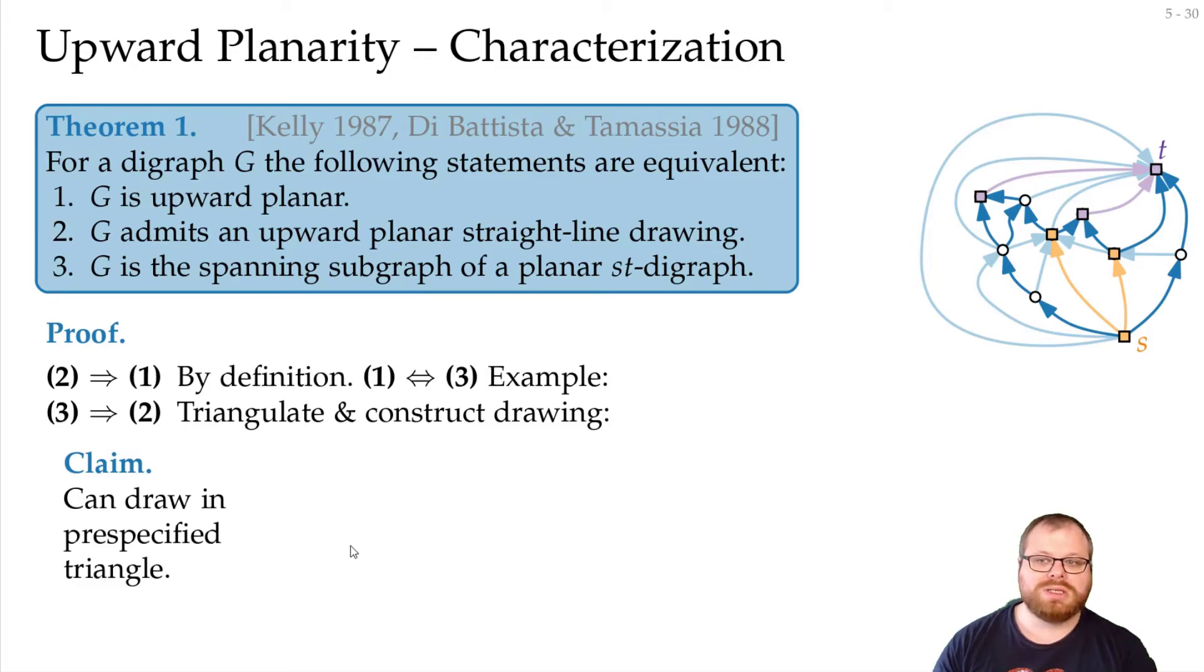And we want to prove that each of these graphs we can draw in a pre-specified triangle. For the induction, the base case is that we have just our vertex S, the vertex T, and some vertex in between. And however the triangle looks like, we can easily just map these three vertices to the corners of the triangle, and we have a drawing of this.